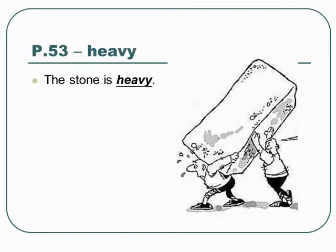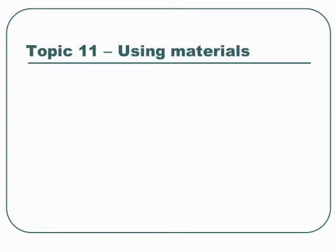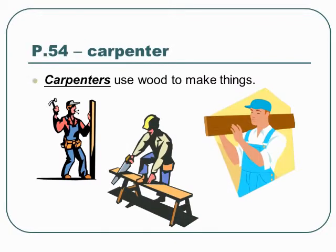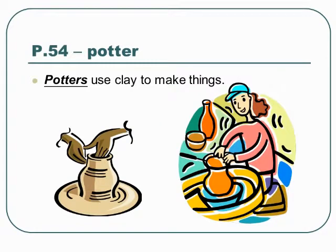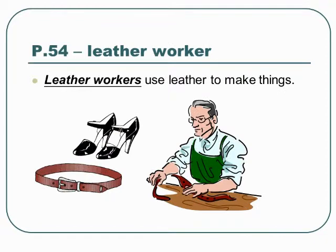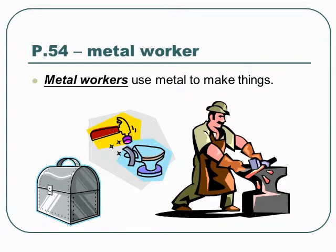Heavy. The stone is heavy. Topic 11: Using Materials. Carpenters use wood to make things. Potters use clay to make things. Leather workers use leather to make things. Metal workers use metal to make things.